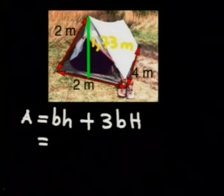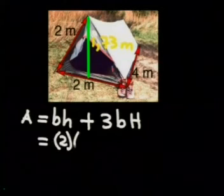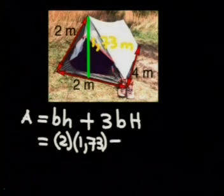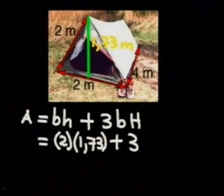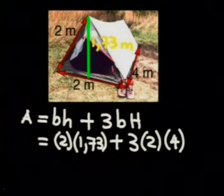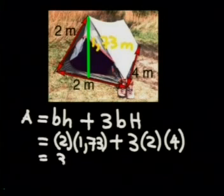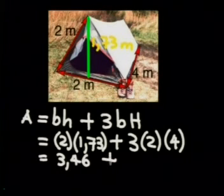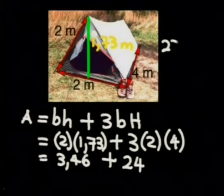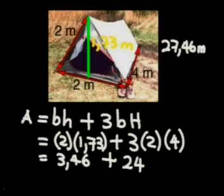And we add 3 base times height of the rectangle. When we substitute the points, we know that the base of the triangle is 2 meters multiplied by the height which is 1.73 plus 3 times the base of the rectangle which is 2 meters times by the height of the rectangle which is 4 meters. And this gives us 3.46 plus 24. So our total surface area for our triangular prism is 27.46 meters squared.